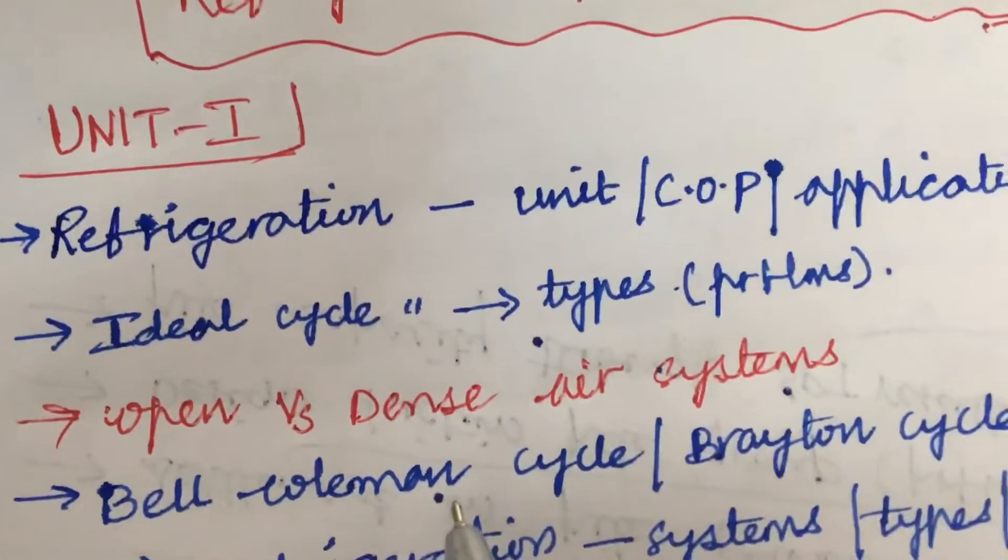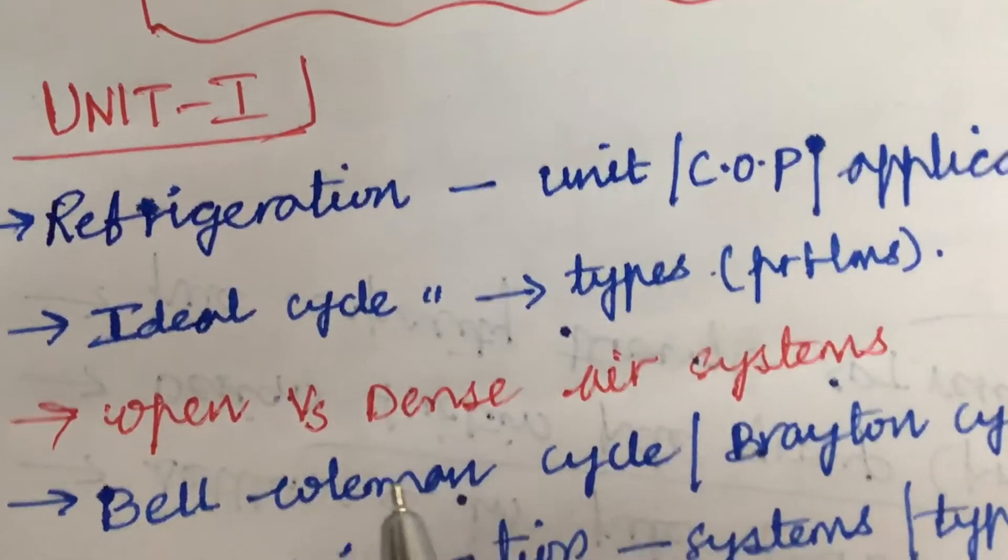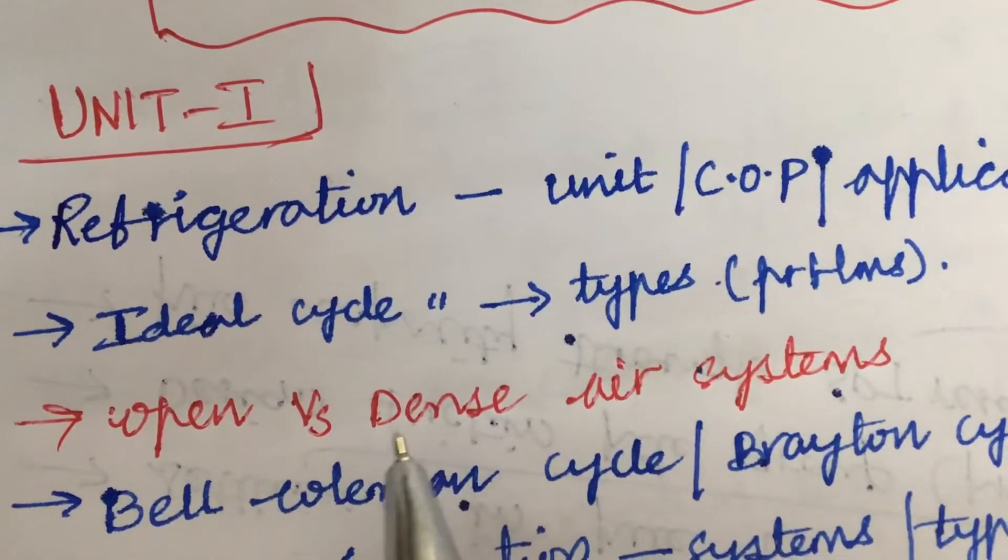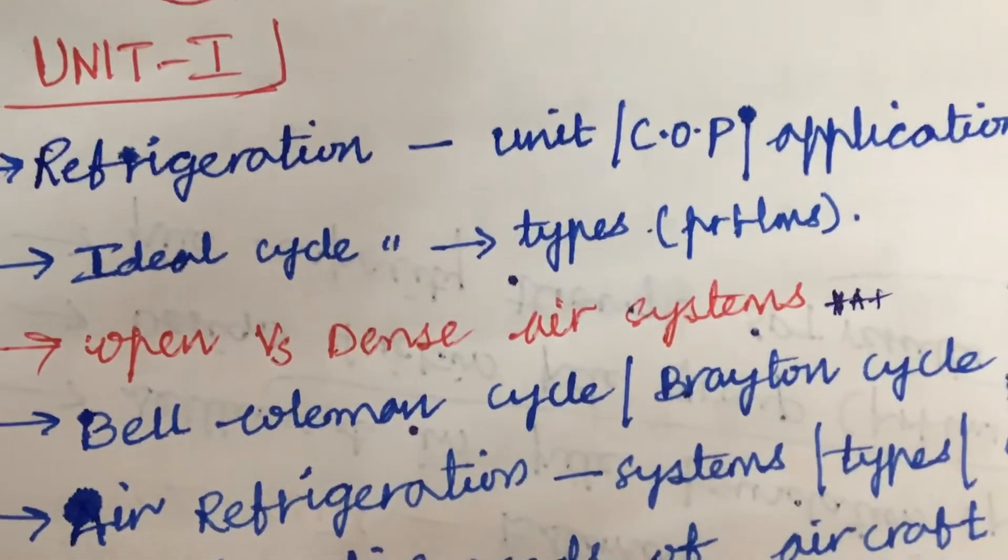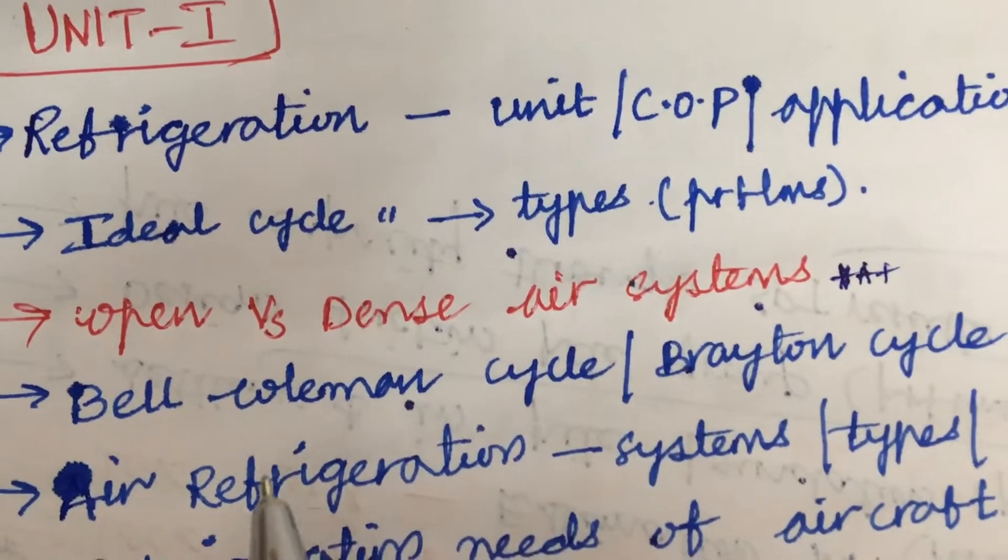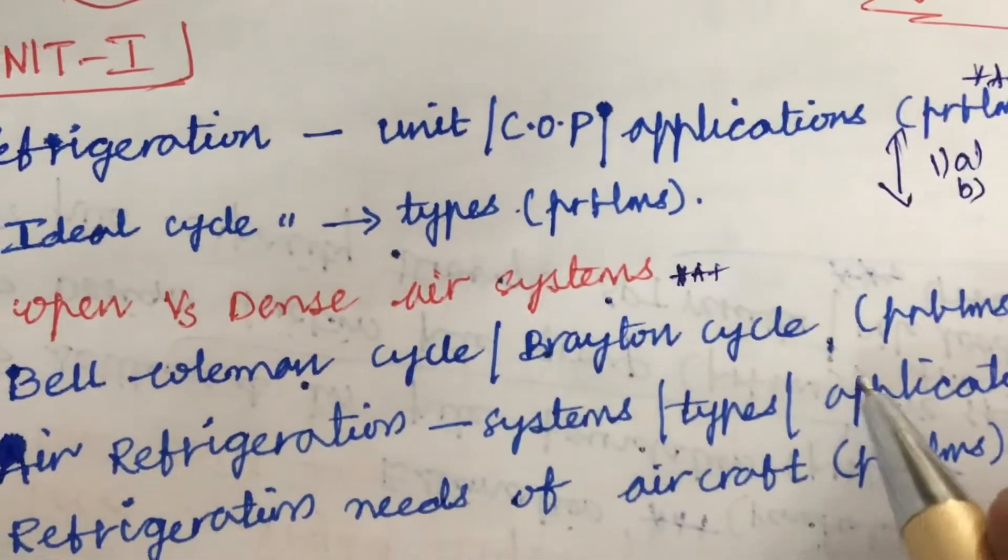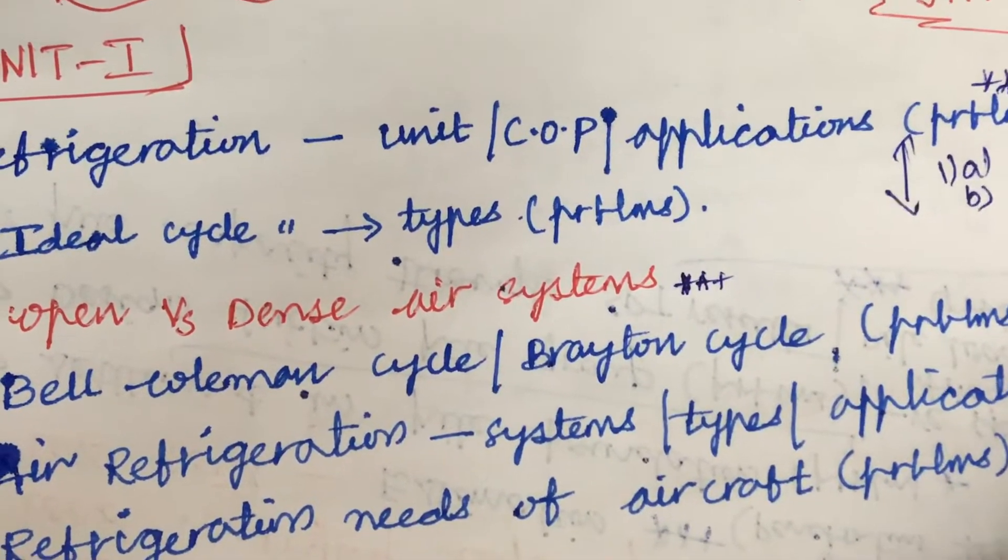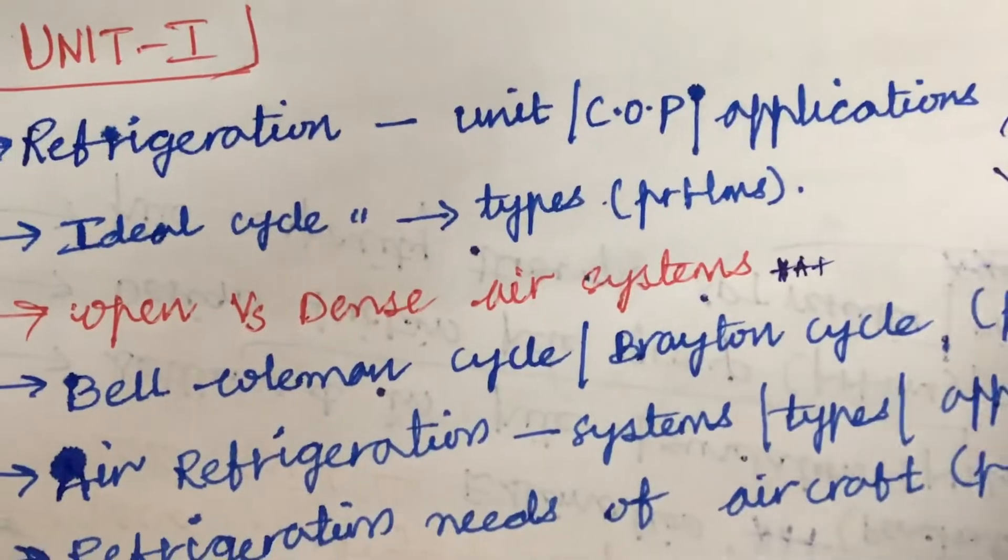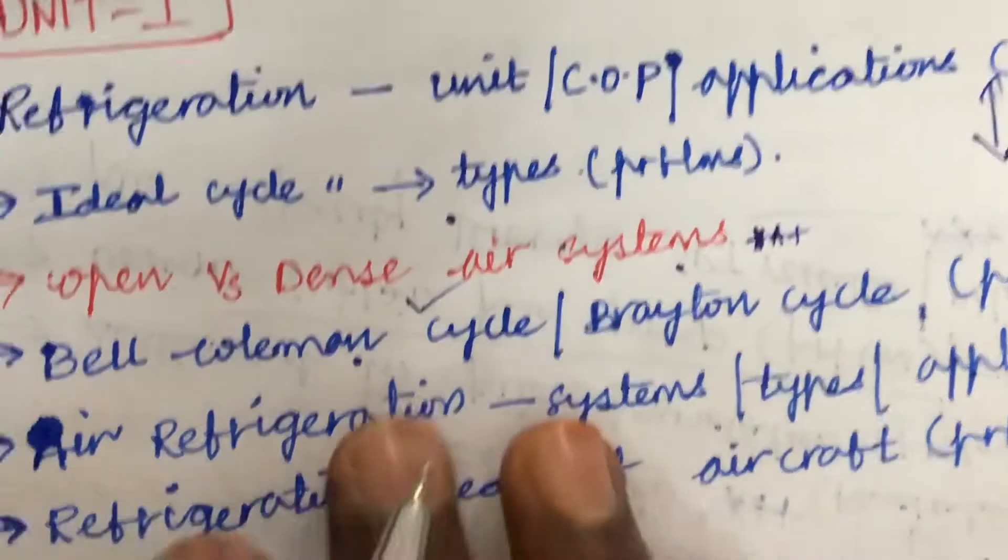Later they may be asking you a simple question like for a 5 mark to explain the differences between the open air system as well as dense air system. It is asked many times. Later, a term or problem related to Bell-Coleman cycle or the Brayton cycle. You need to have a clear understanding in these two concepts where the problem will be asked for sure, and this is also one of the gunshot questions related to Bell-Coleman cycle.